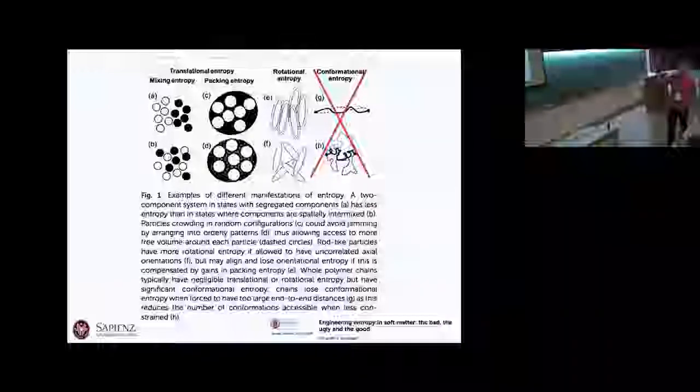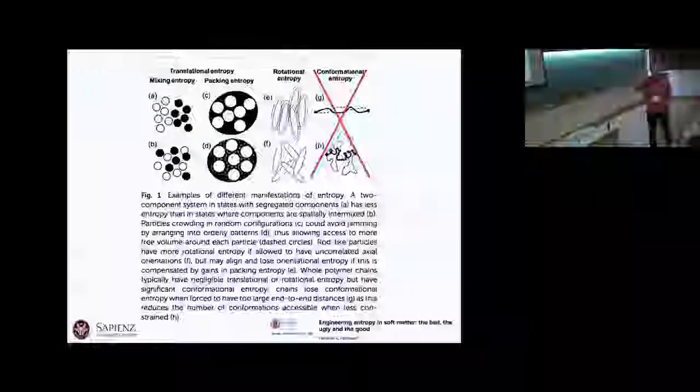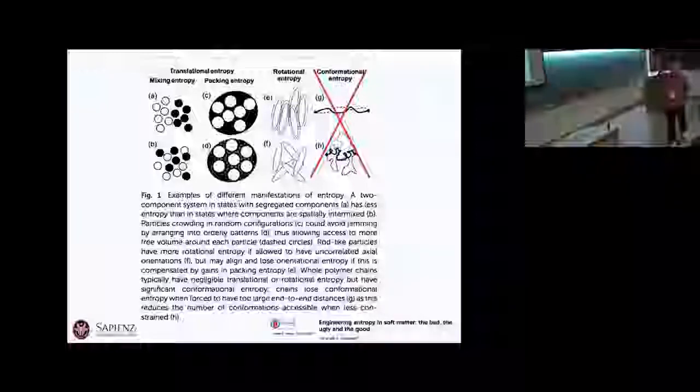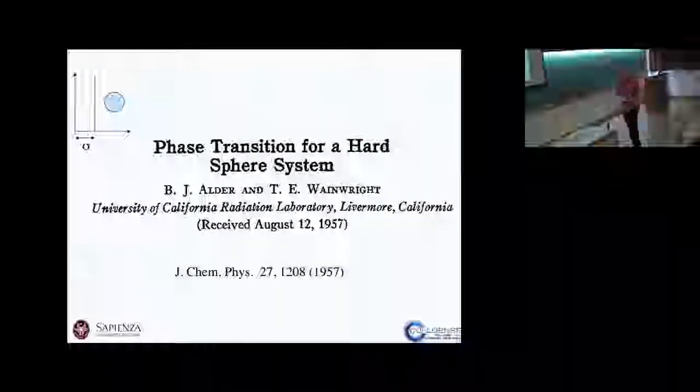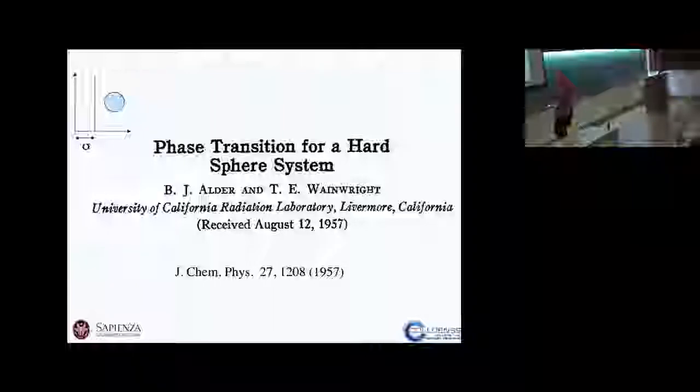Today and tomorrow we cover: mixing entropy — the entropy gained by mixing two different compounds; translational entropy, which controls packing (we'll see the case of hard spheres); and rotational entropy, which controls the orientational ordering of the system. We'll discuss the nematic transition. Entropy in polymeric systems and micelle formation has already been discussed with Sanat Kumar, so we won't cover polymer entropy despite its relevance in soft matter.